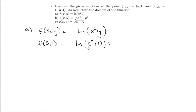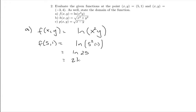5 squared is 25, and 25 times 1 is just 25. So this becomes the natural log of 25. If you'd like, by writing 25 as 5 squared, you could write that as 2 ln 5.